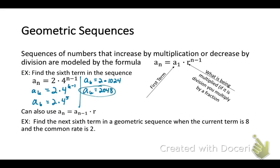You can also use the recursive notation: a sub n equals a sub n minus 1 times the rate. We want to find the next sixth term in a geometric sequence when the current term is 8. So we'll say the next term equals our current term times 2. In this case, the sixth term equals 16.